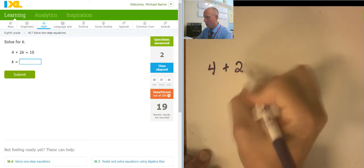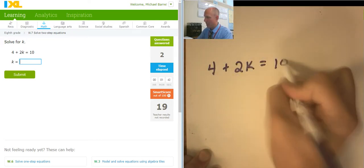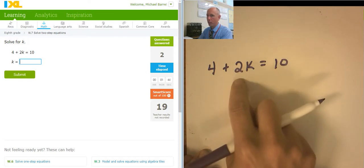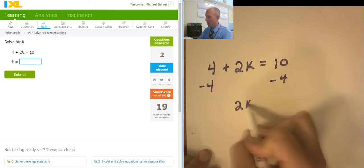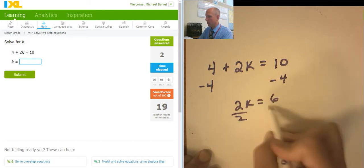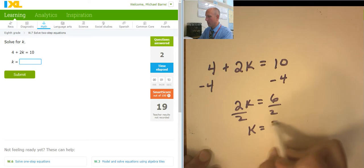4 plus 2k equals 10. Sneak up on the variable. Don't go right for the 2. Go for the 4. I would like to subtract 4 from both sides. 2k equals 6. I would like to divide both sides by 2. k equals 3.